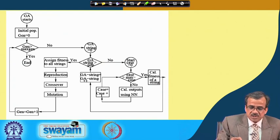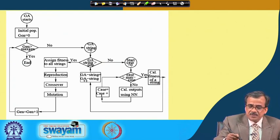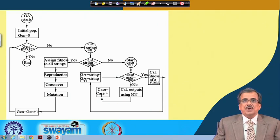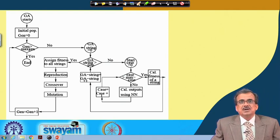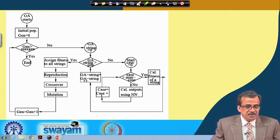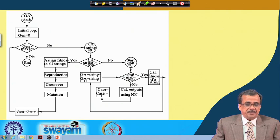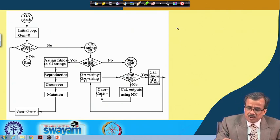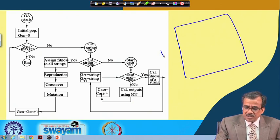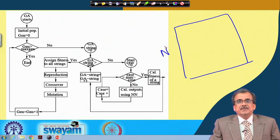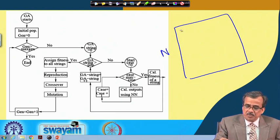This shows a flowchart or schematic view of how the system works. Let me explain the working principle of this genetic neural system with the help of this flowchart. As I mentioned, genetic algorithm is nothing but a population-based approach, so I have got a population size N and this population of solutions is generated at random.